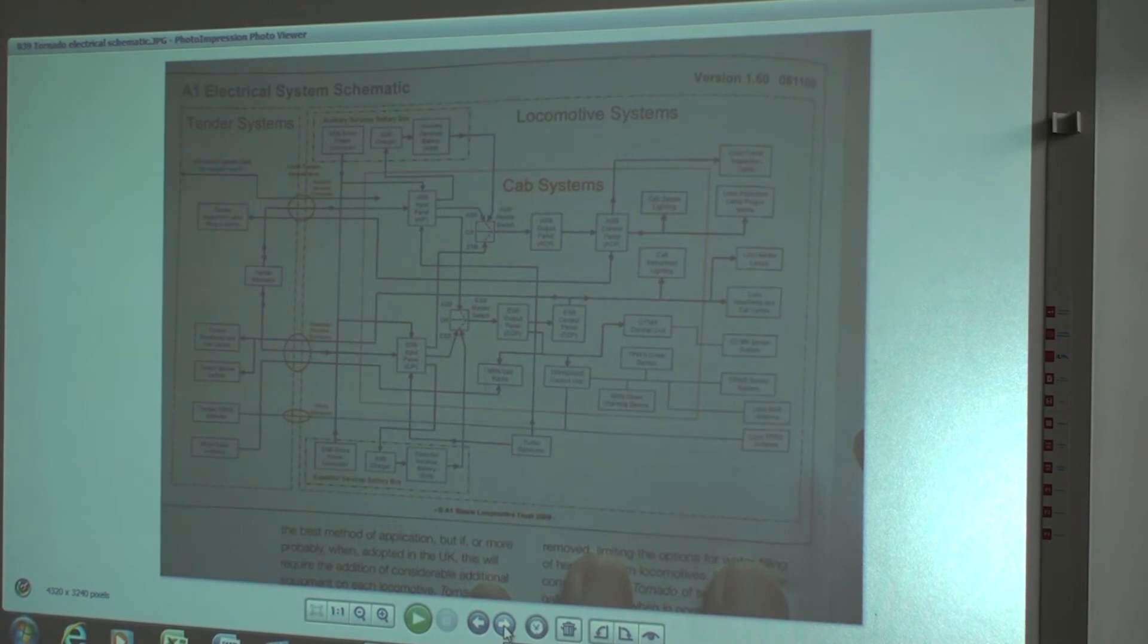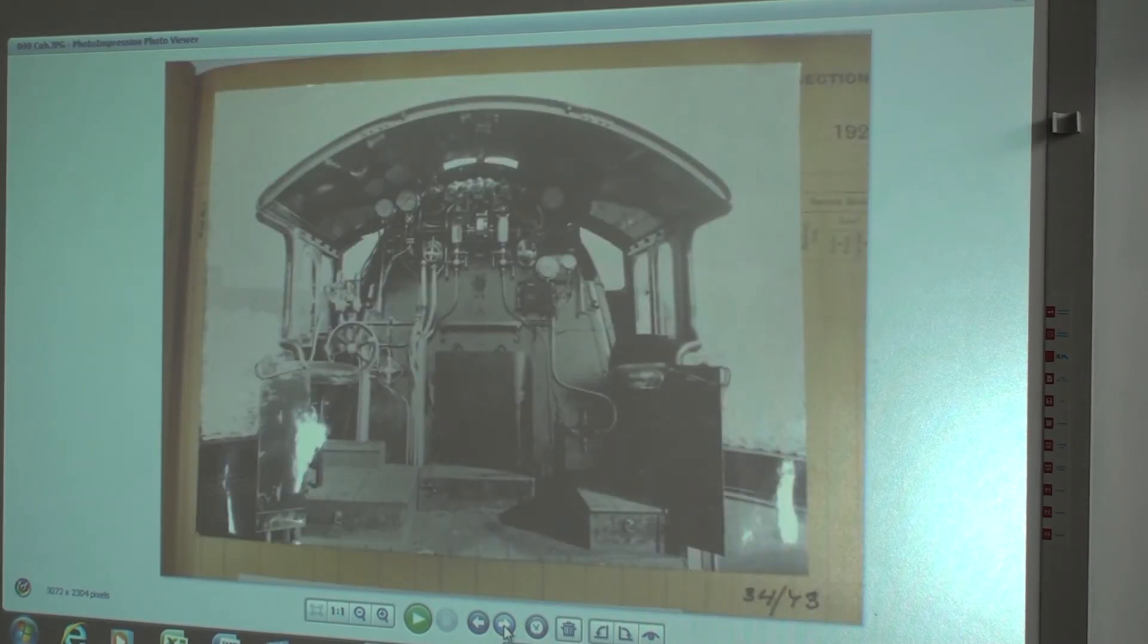That's just to show you. This is a Tornado braking system. We've got to go through a similar process, but it's a line diagram of everything that has to work with each other to make it safe to run on Network Rail.